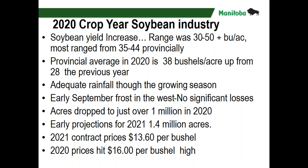There was quite a range in yields last year — 30 to 50 bushels plus that I've been hearing from growers, and when I looked at the MASC yield data, there were some 50-bushel yields reported as well. Most of the ranges were in that 35 to 44 bushels per acre range. Our provincial average this year was definitely up — we hit 38 bushels an acre, a big jump from the previous year of 28. In 2019 the September was very wet and some soybeans were taken off in the snow or in the spring.